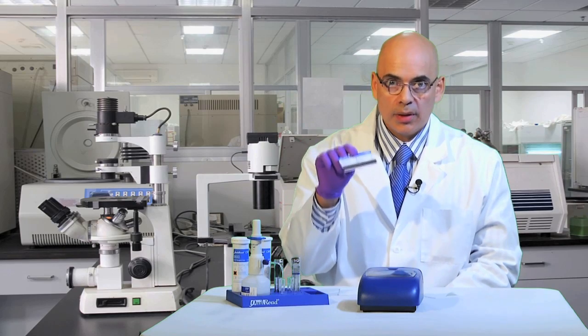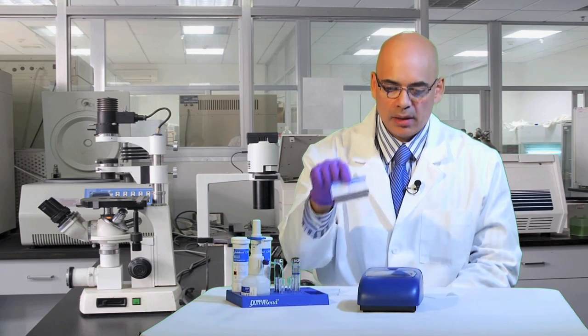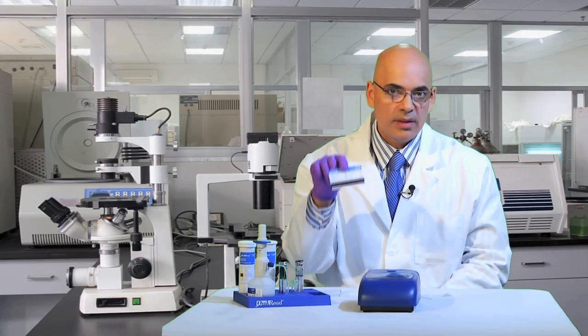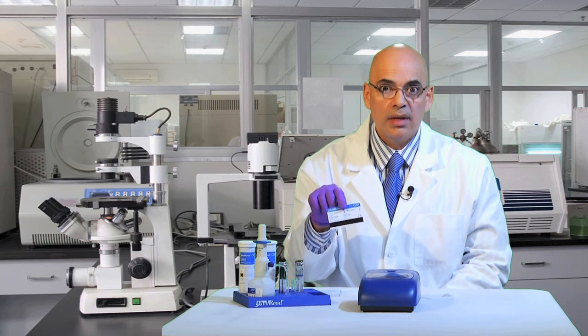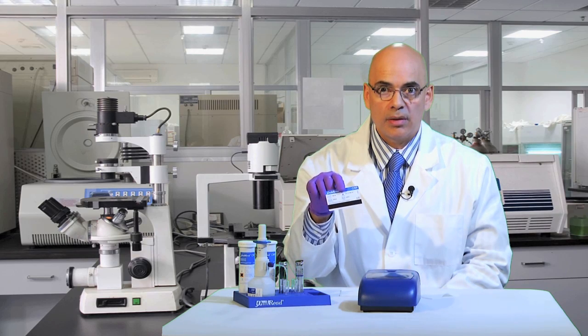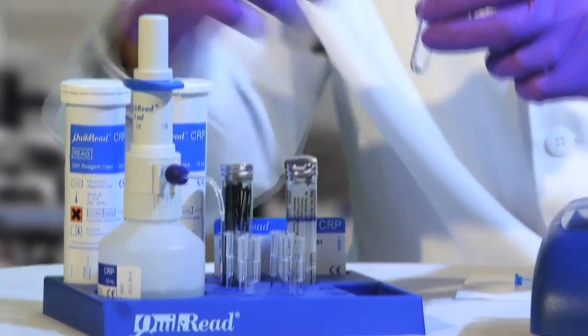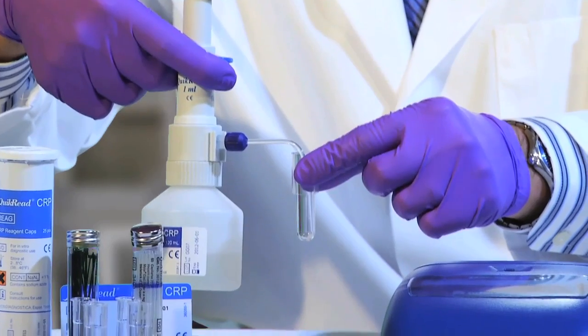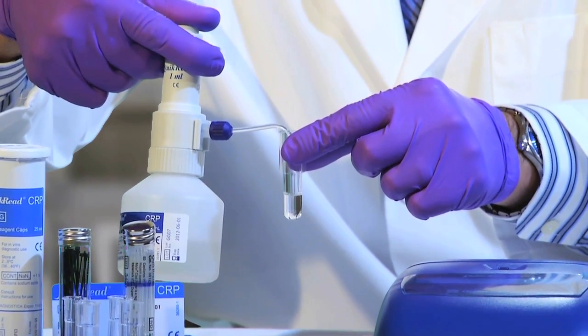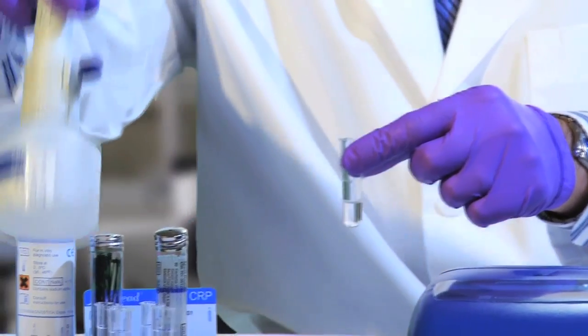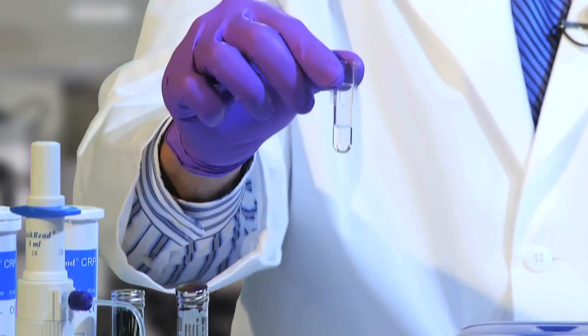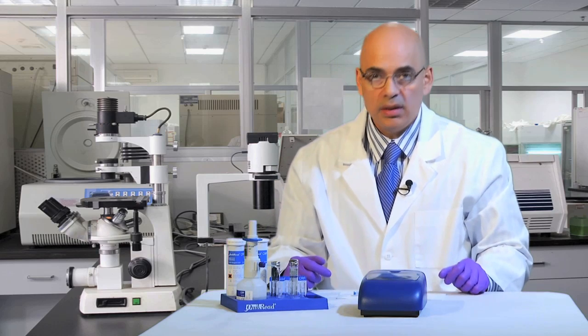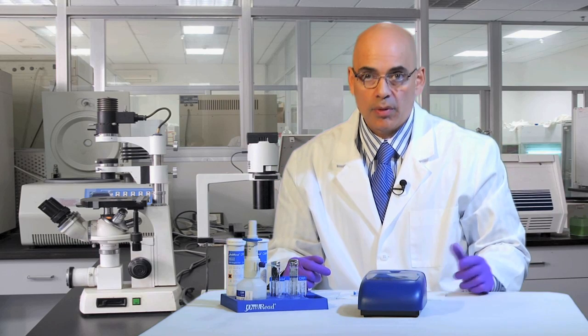The very first thing we're going to do before we begin testing is swipe the magnetic card through the instrument. This card tells the instrument that it's going to be running a C-reactive protein test, and it also contains the calibration curve from the factory. The next step is to pipette one milliliter of buffer solution into the test cuvette. Then we'll put this back into our workstation because we're going to need to add the patient sample or control sample next.